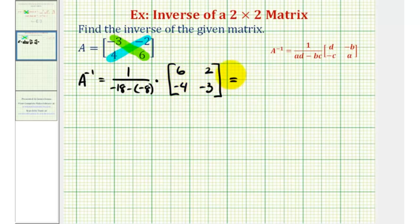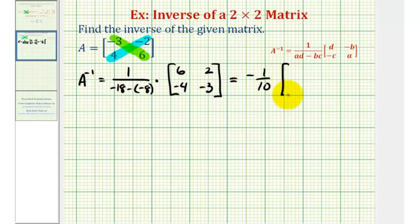So let's go ahead and simplify here. We have one divided by — this would be negative eighteen plus eight, or negative ten — so we have one divided by negative ten, or negative one-tenth, times the matrix with elements six, two, negative four, negative three.